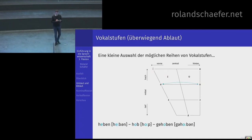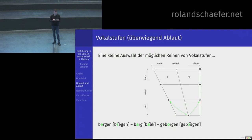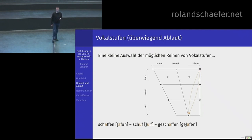Wenn wir heben, hob, gehoben haben – da gehen Sie nach hinten. Binden – band – gebunden: da gehen Sie vom I zum A zum U. Bergen – barg – geborgen: geht auch nach hinten. Aber schaffen – schuf – geschaffen: da gehen Sie vom A zum U und wieder runter. Sitzen – saß – gesessen: vom I zum A zum Ä. Also mit nach hinten ist nichts – bei diesen Vokalstufen gehen Sie immer irgendwie quer durchs Vokaltrapez.